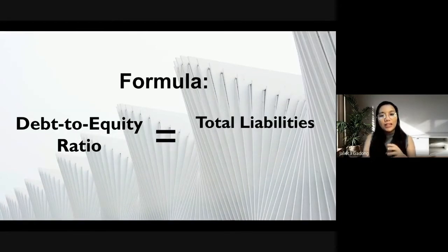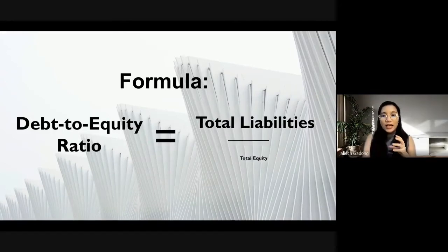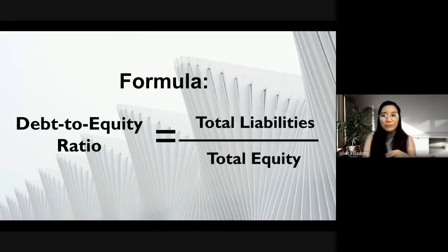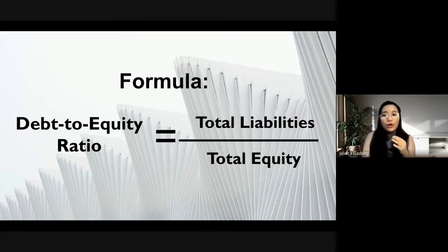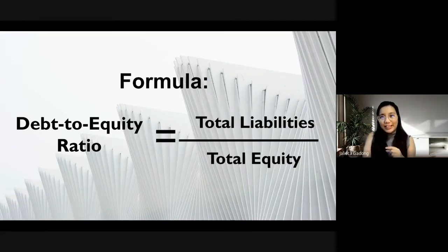Now let's talk about the debt-to-equity ratio formula. This gives us an idea about the relationship of the total liabilities with the total equity. We solve for it by dividing the total liabilities by the total equity.